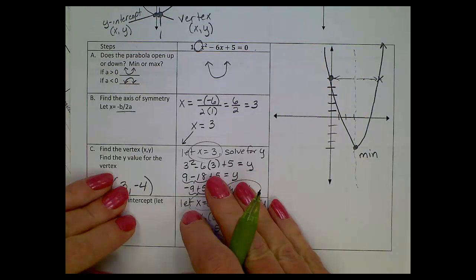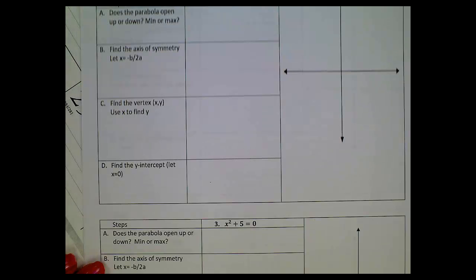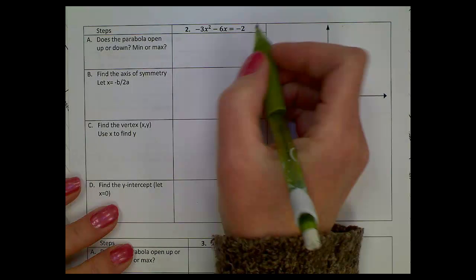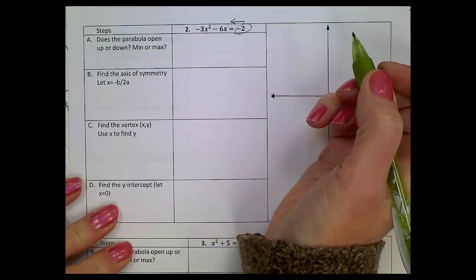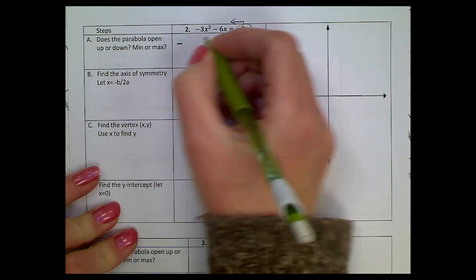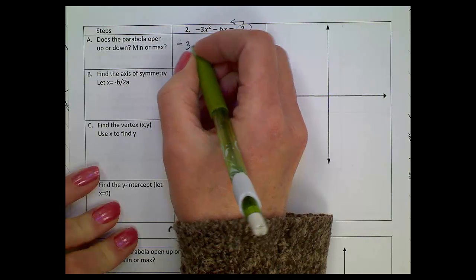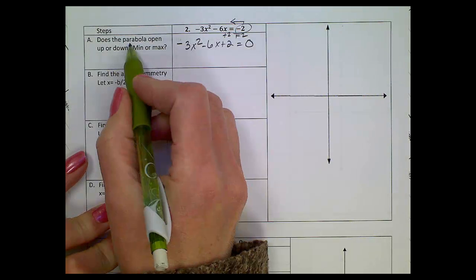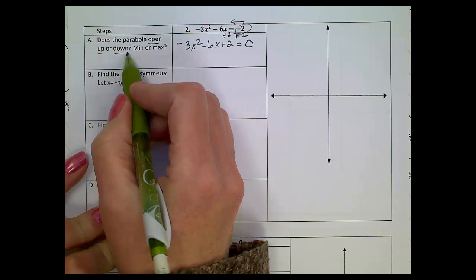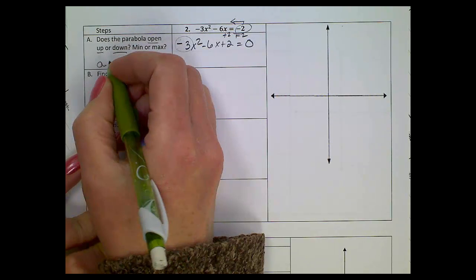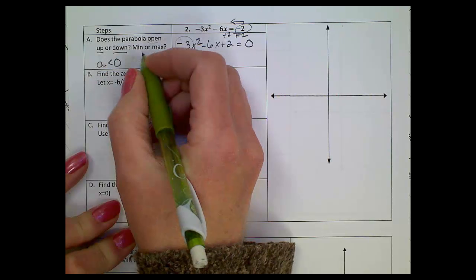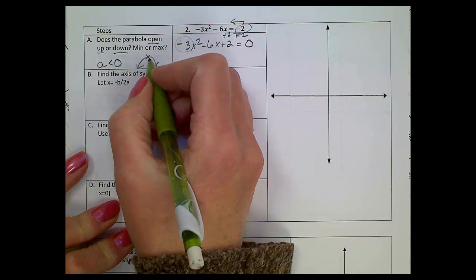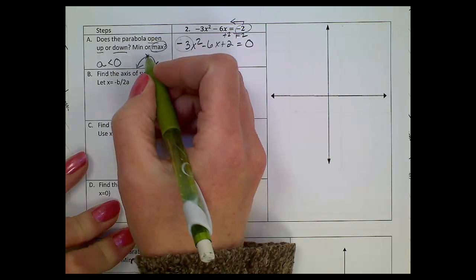Let's look at one more. Number two, we have -3x² - 6x = -2. Our first issue is these equations must equal zero, so let's do a quick rewrite. We'll add two to both sides, so we'll have -3x² - 6x + 2 = 0. Now we're trying to figure out if the parabola opens up or down. I have a leading coefficient that's a negative value. My a is less than zero, so it's going to open down or reflect. My vertex point at the top is actually going to be a maximum.